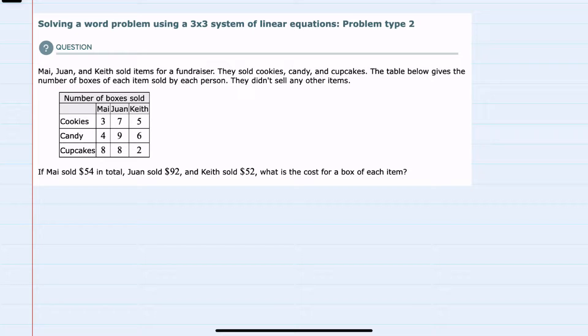Since our items are cookies, candy, and cupcakes, I don't want to use the first letter since they're all C. I'm just going to call the price of cookies X, the price of candy Y, and the price of cupcakes Z.